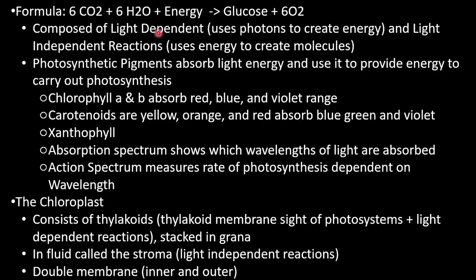Carotenoids appear yellow, orange, and red because they reflect those wavelengths and absorb the others. Xanthrophyll is another pigment type. The absorption spectrum shows which wavelengths of light are absorbed, and the action spectrum measures the rate of photosynthesis dependent on the wavelength received. The chloroplast is inside our cells and facilitates light-dependent reactions; it consists of thylakoids, whose membranes are the site of photosystems.